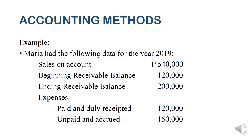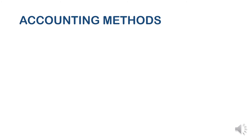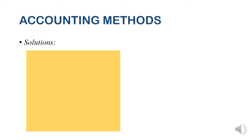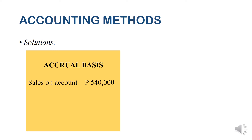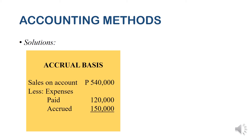To solve Maria's problem, we first determine if she is selling goods or service. Let's assume first that Maria is selling goods, so we use accrual basis. Under accrual basis, we take sales on account of 540,000 and deduct both the paid and accrued unpaid expenses — a total of 270,000 pesos. Therefore, under accrual basis, Maria would report an income of 270,000 pesos.